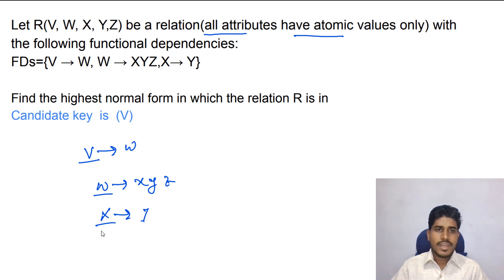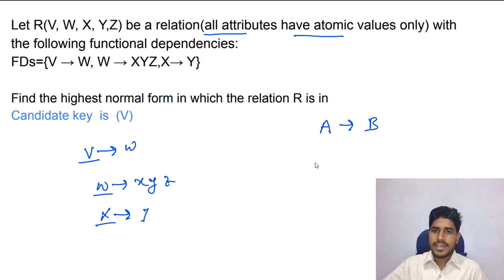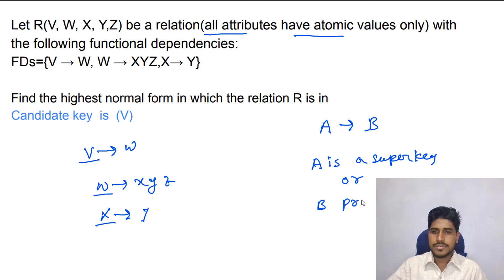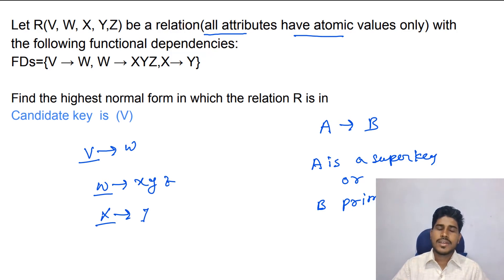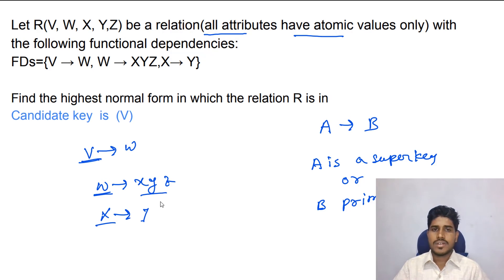Now we have to check third normal form. Third normal form states that for every functional dependency A determines B, either A is a super key or B is a prime attribute. Checking this relation against those conditions, this relation is in third normal form — and therefore also in second normal form.